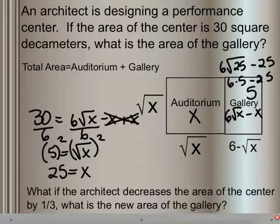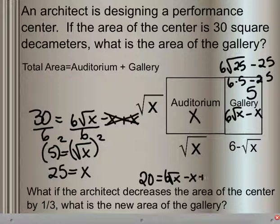It also says: what if the architect decreases the area of the center by a third? What is the new area of the gallery? If we're decreasing the area by a third, we just have 20 now equal to 6 root x minus x plus x. You can go ahead and try and solve that on your own.